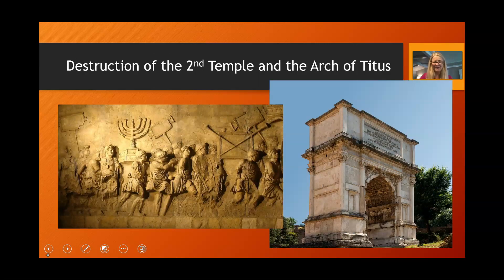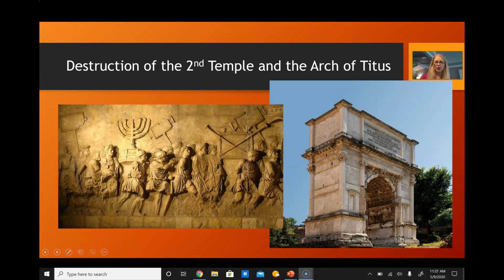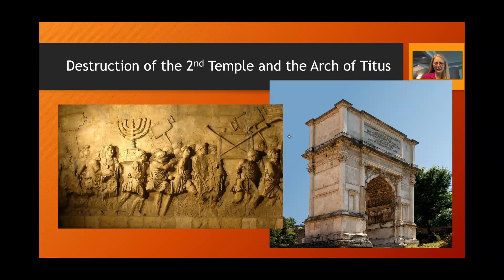Like the first temple, the second temple was also destroyed — this time by the Roman Empire. What you see on this slide is a picture of the Arch of Titus, erected in honor of the destruction of Jerusalem and the temple. Within the arch you can see reliefs carved in stone of the Romans victoriously carrying the menorah and the table of showbread away from Jerusalem. This occurred in 70 AD, 40 years after the death and resurrection of Christ. This begins the great diaspora — the exile of Israel, not just to Babylon for 70 years, but to the ends of the earth for coming up around 2,000 years.